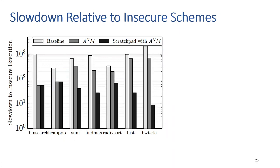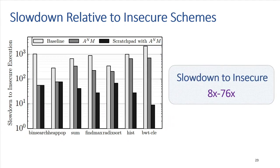Our key result: the y-axis shows slowdown relative to insecure execution; the x-axis shows different programs. Programs on the right such as BWT-RLE (Burrows-Wheeler Transform followed by run-length encoding) exhibit inherent locality, while programs on the left such as binary search exhibit none. The three bars correspond to: baseline AM scheduling, the A^N M optimization, and the full scheme with both A^N M and scratch pad. The slowdown to insecure execution ranges from 8x to 76x — as low as 8x for locality-exhibiting programs like BWT-RLE and around 76x for programs with no locality. This shows that for certain programs, such architectures can be practically useful for obfuscation.